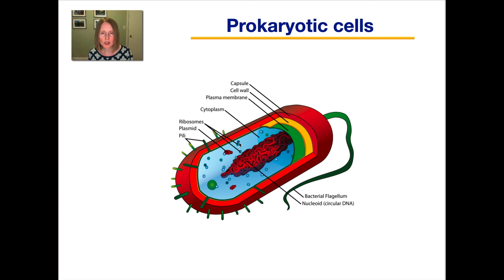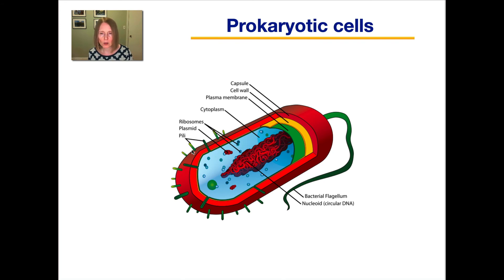And then we have the ribosomes that make proteins based on the instructions in the DNA. Some prokaryotes also have little extensions sticking out called pili, and some have a tail called a flagellum that can help them swim.